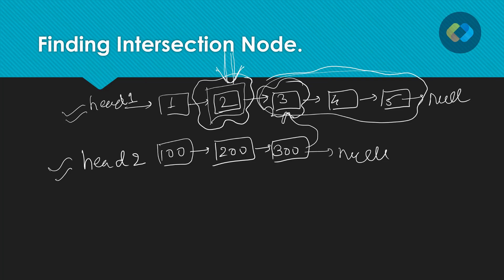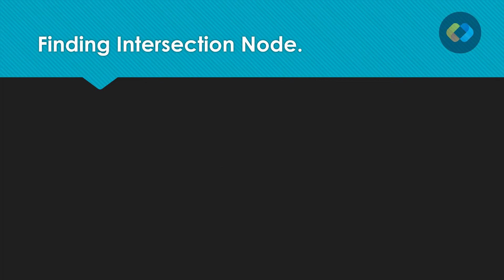So this is the problem. I would like you guys to pause the video and think about the solution — how you're going to find this intersecting node in these two linked lists. There are two different solutions to this problem: one is the optimized one and one is the basic solution. You should be able to come up with the basic solution at least. Basically you have to find the first node which is common between these two linked lists.